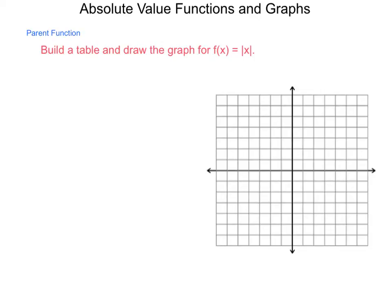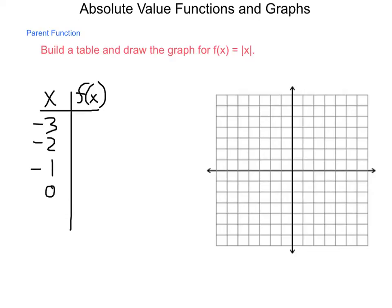We're going to build a table and draw the graph of f of x equals the absolute value of x. Starting with a simple table, we have our x value and our f of x, taking x from negative 3 to positive 3 in increments of 1. Absolute value is simply distance from 0, so the distance of negative 3 is 3, negative 2 is 2, then 1, 0, 1, 2, and 3.